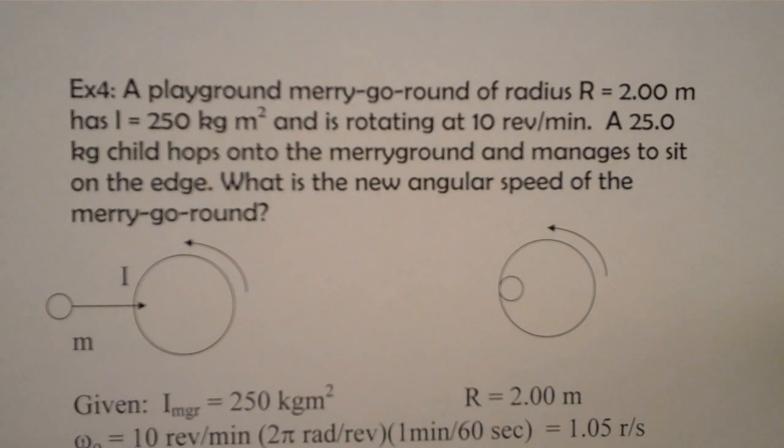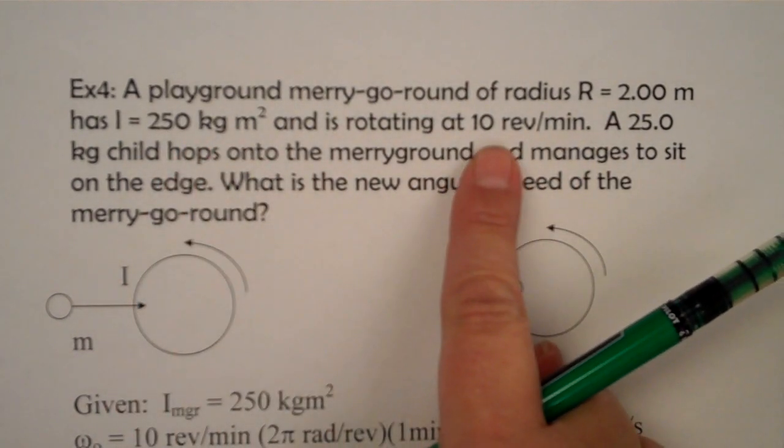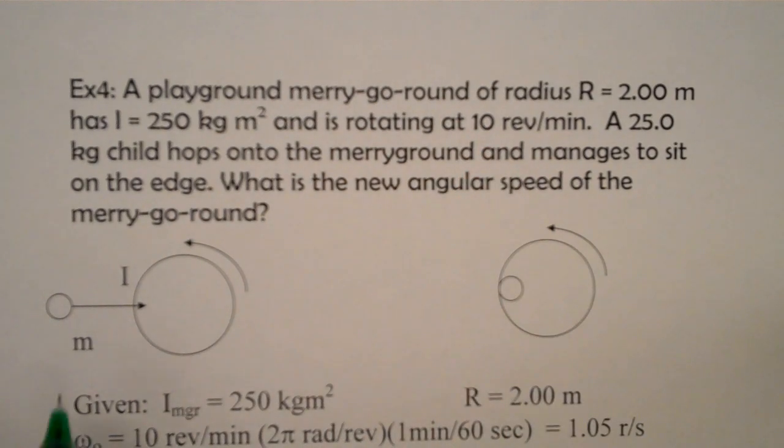So in this case the merry-go-round or the wheel is rotating to begin with. They tell us its radius, its moment of inertia, and its initial rotation speed. And then we're going to have a child jump on and add mass to this, which we know makes it harder to rotate. It's going to increase its moment of inertia, and we're going to look to see what the new angular speed is going to be.